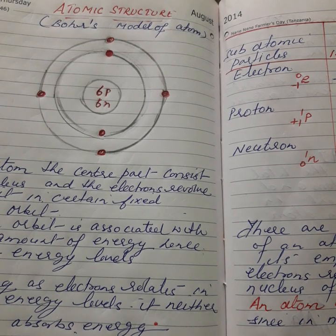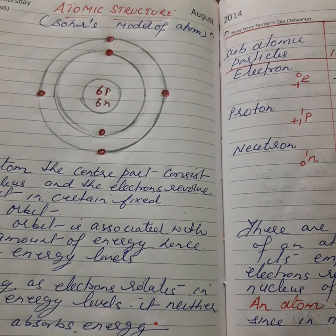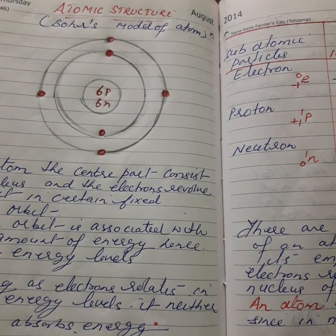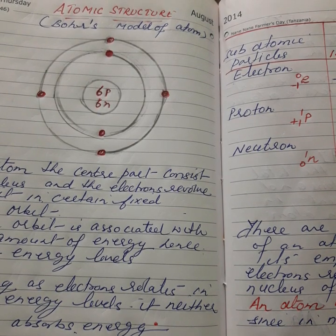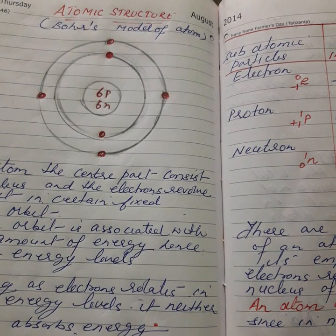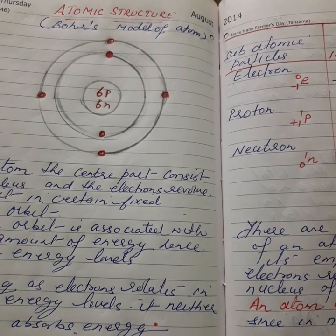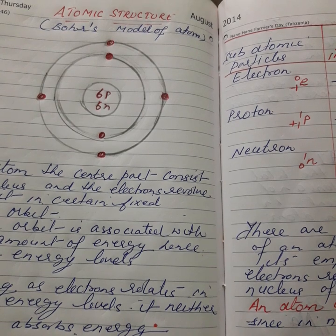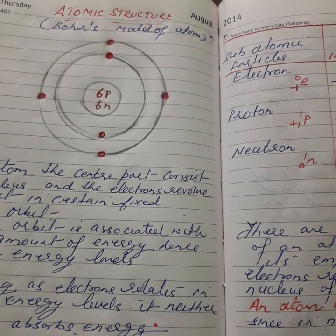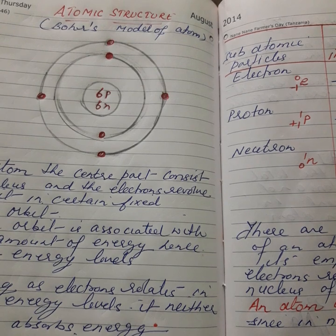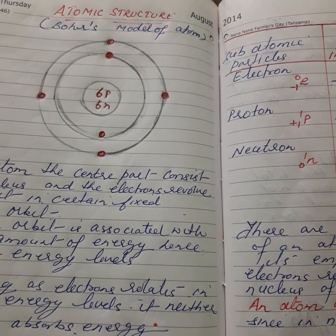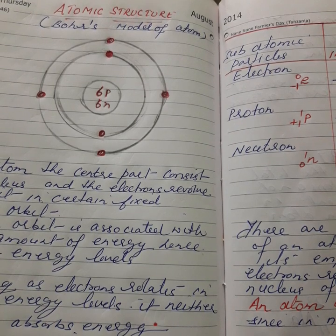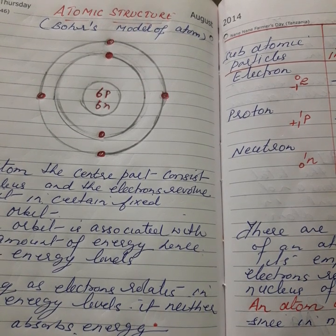The nucleus contains protons and neutrons. In the extra nuclear region, electrons revolve around the nucleus along imaginary paths known as shells or orbits. We will study three subatomic particles of great importance in understanding the structure and behavior of atoms: electron, proton, and neutron.